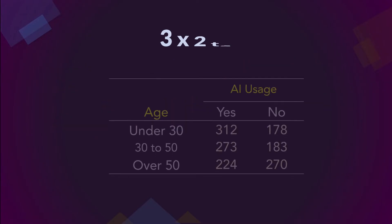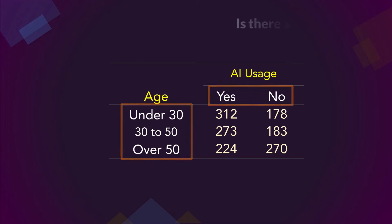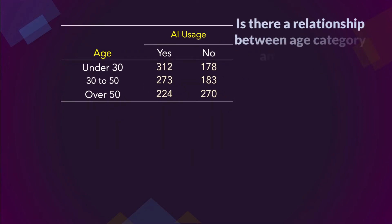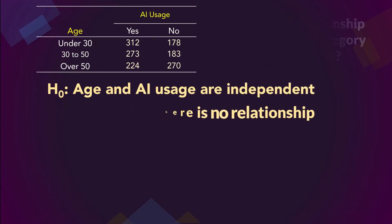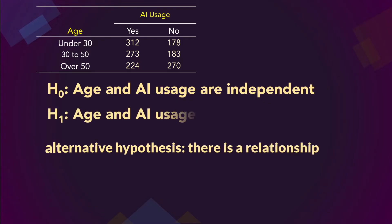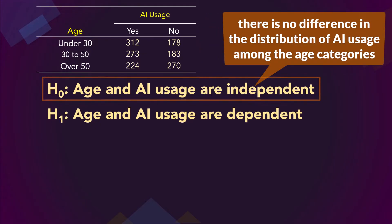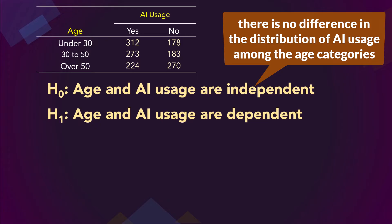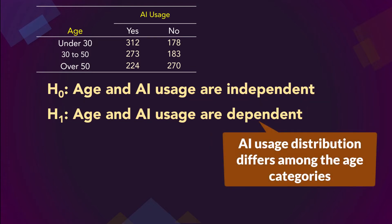Let's begin with this 3x2 contingency table — that is, we have three rows and two columns. Suppose we want to test if there is a relationship or association between age category and AI usage. Then the null hypothesis would be that there is no relationship between the two variables; in essence, age and AI usage are independent. The alternative would be that there is a relationship — that is, age and AI usage are dependent.